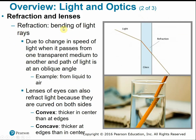Refraction is the bending of incoming light rays. When light travels through different transparent mediums, it can shift its angle. A common example is the transition from liquid to air — when you look at a pencil in a glass of water, light refraction causes a disconnect between the two halves. The lenses of our eye can also work to refract light in this same manner.